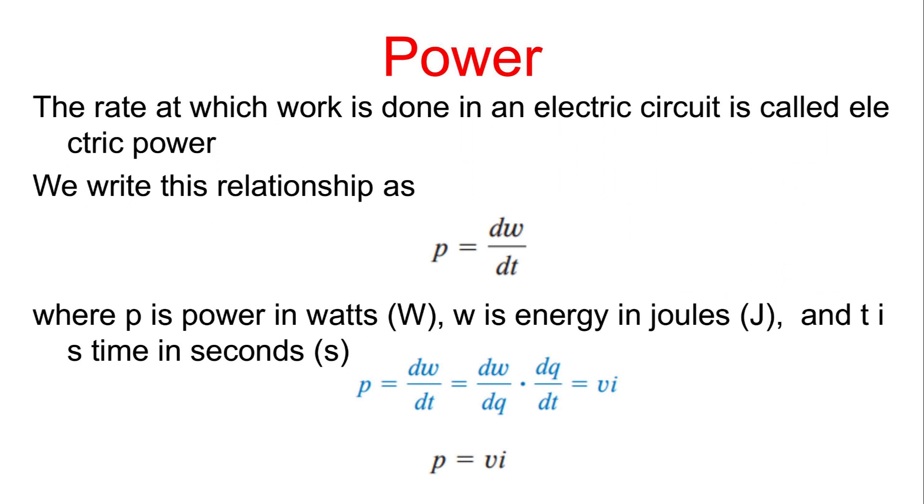Power: The rate at which work is done in an electric circuit is called electric power. We write this relationship as p equals dw by dt, where p is power in watts (W), w is energy in joules (J), and t is time in seconds (s). p equals dw by dt.